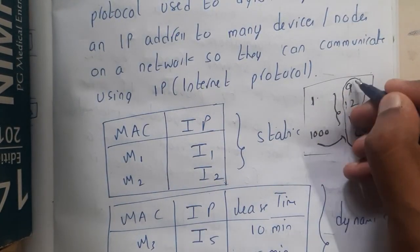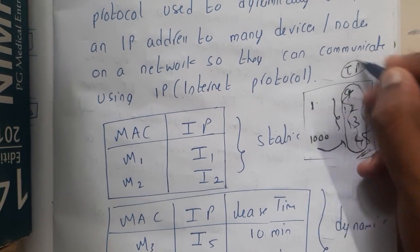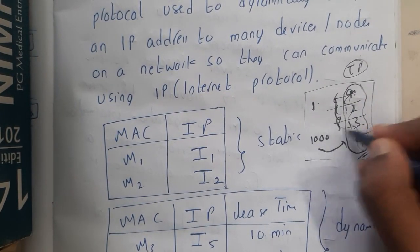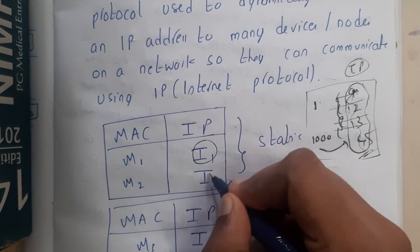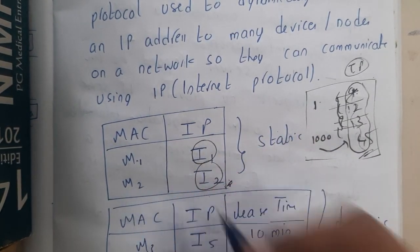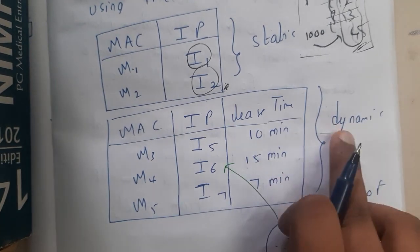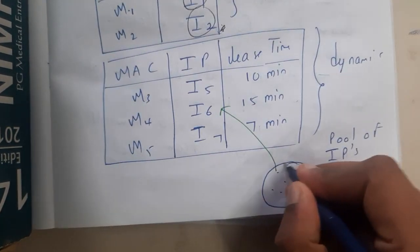Instead of these numbers, assume them as IPs. If IP addresses are given manually by a person, that is called static and they are fixed - I1 for this guy, I2 for this guy. Whereas in dynamic, we will be having a pool of IP addresses.